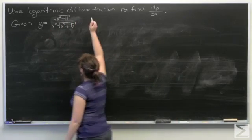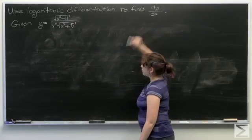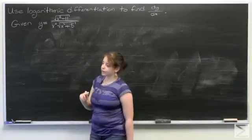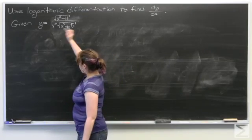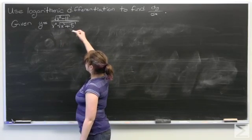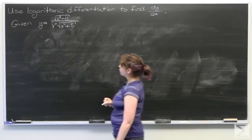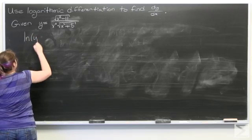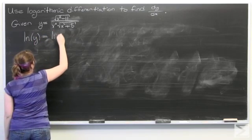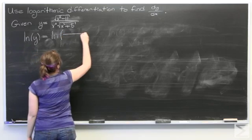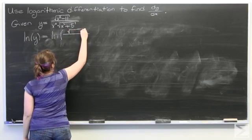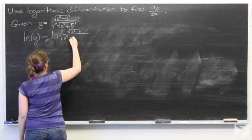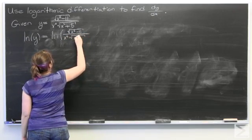We're going to use logarithmic differentiation to find dy/dx given the function y equals the square root of x squared minus eleven divided by the quantity x to the sixth times the square root of x squared plus five.